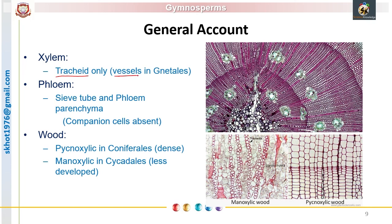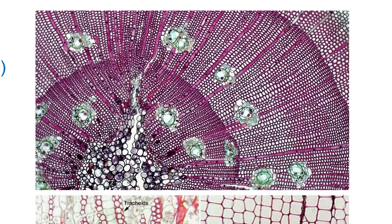Vessels can be recorded in Gnetales, and that is why Gnetales are said to be the most evolved gymnosperms — they show resemblance with angiosperms. This picture shows the transverse section of the Pinus stem. The xylem is the red-colored zone, whereas at the center we can see the parenchymatous pith. The primary xylem is present at the center.